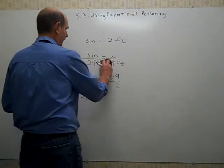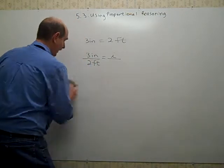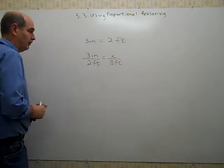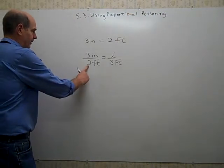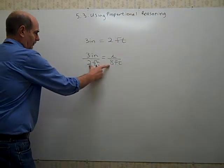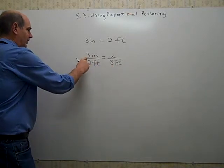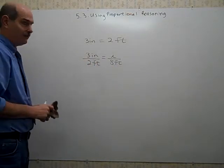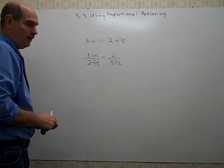Probably an easier one if I could have started with how do you represent 8 feet. You could use the equal fractions property to solve this one. Multiply by 4, and it would be 4 times 2 is 8, and then 3 times 4 would be 12. So it would take 12 inches to represent something that's 8 feet long. So that's how you use scale models.